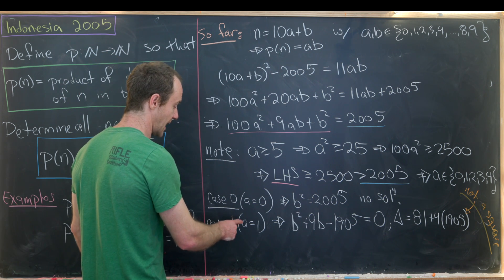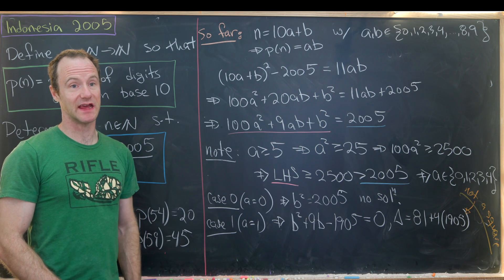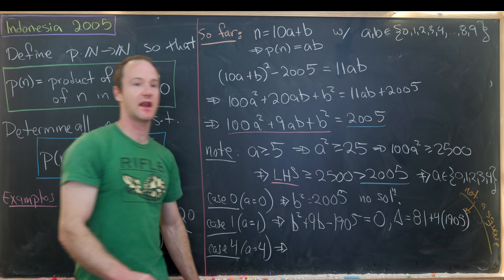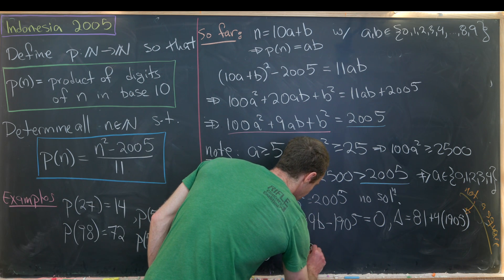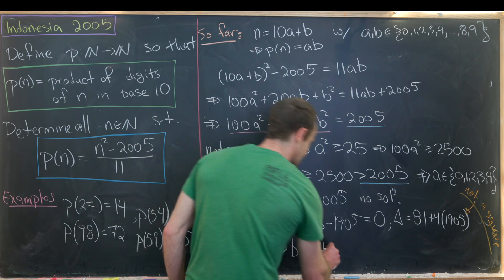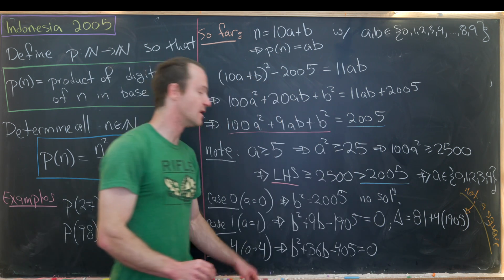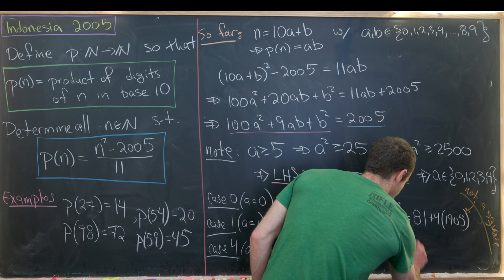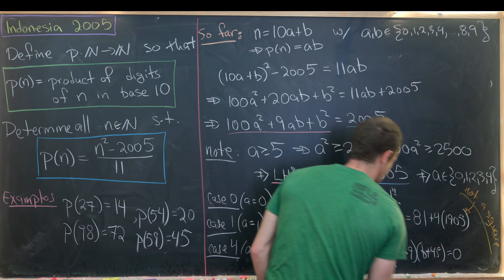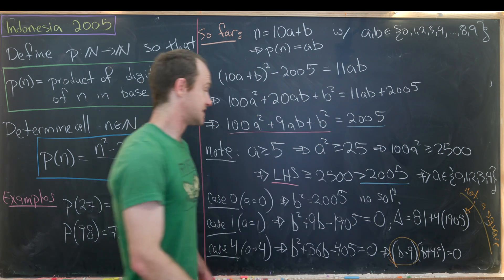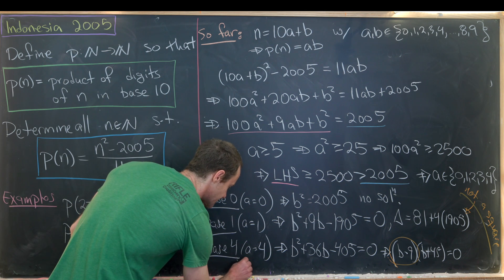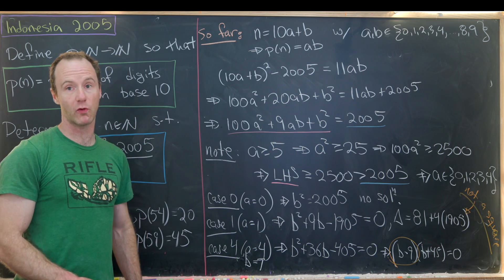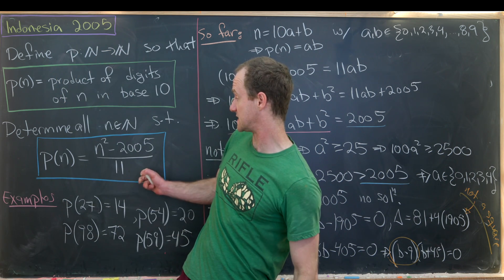Then maybe case number two and three, I'll let you do on your own. But you'll end up with no solution in that case either. And that leaves us with the last case. I'll call that case 4. That's when a is equal to 4. So that collapses this thing into the following quadratic equation. We have b squared plus 36b minus 405 equals 0. But luckily enough, this thing actually factors fairly easily. So this factors like b minus 9 times b plus 45 equals 0. But this b minus 9 tells us that b would be equal to 9. That's a solution to this. And so that gives us our solution a equals 4 and then b equals 9. So in the end, n is equal to 49.